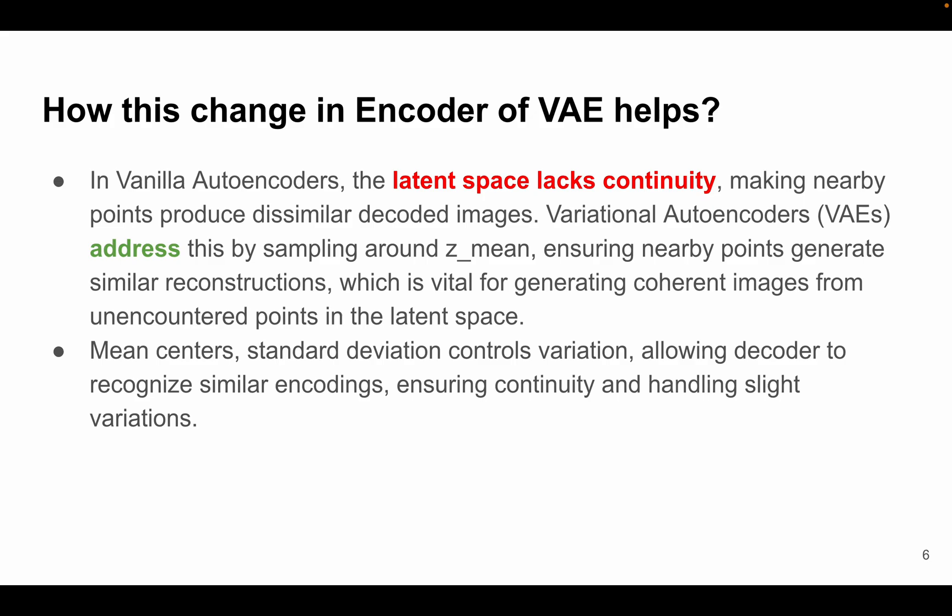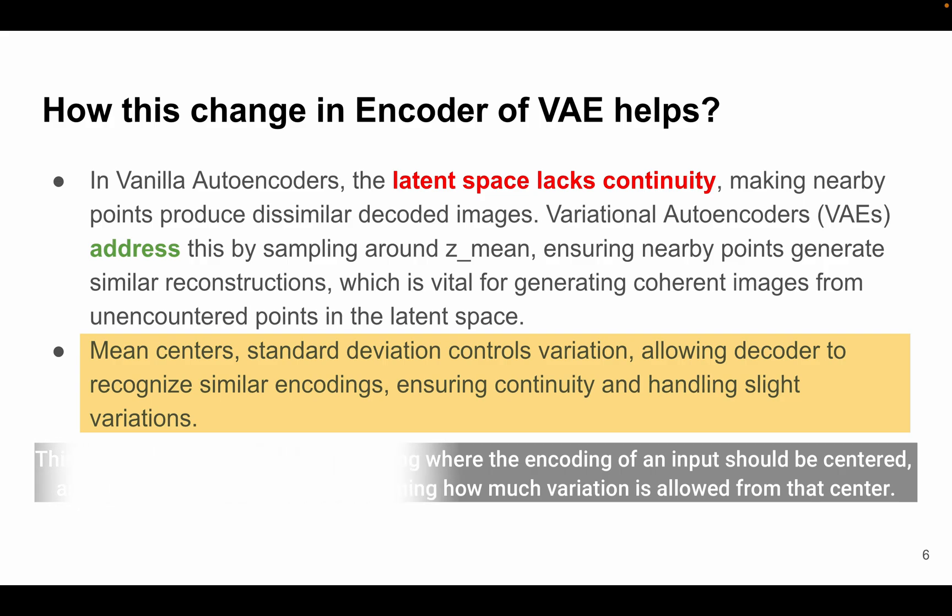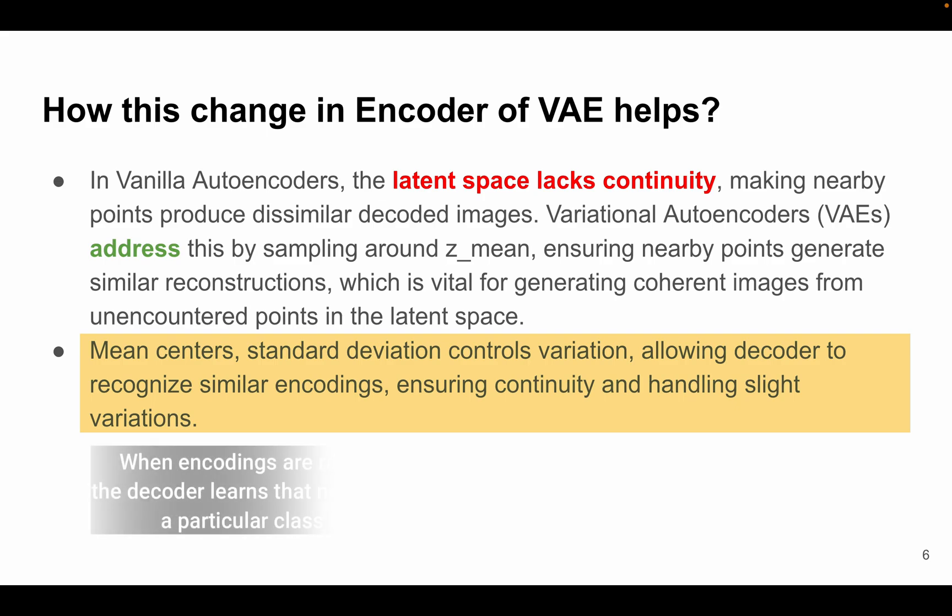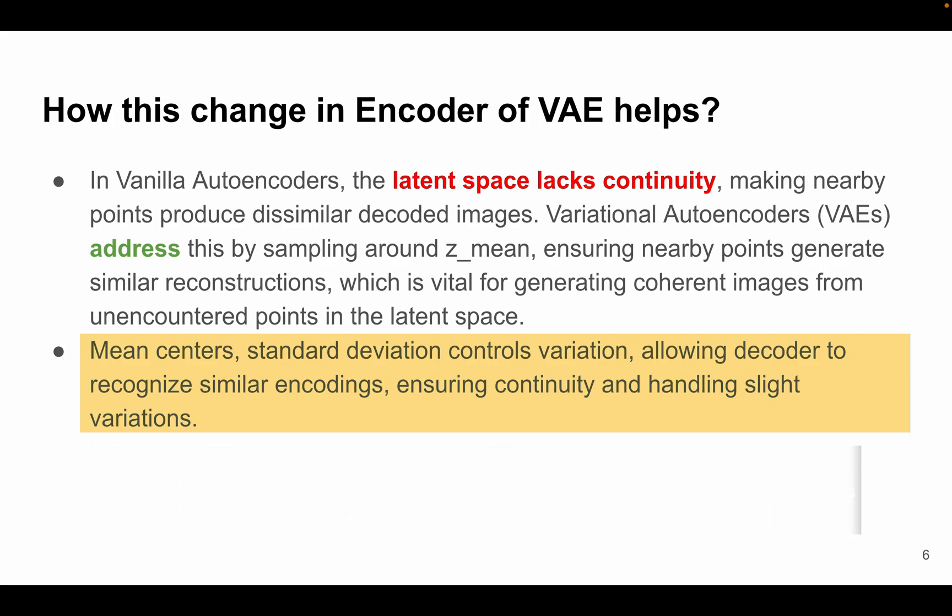So in simple terms, think of the mean vector as determining where the encoding of an input should be centered in the latent space, and the standard deviation as governing how much variation is allowed from that center. Now when encodings are randomly generated within this circle of distribution, the decoder learns that not only one specific point in the latent space represents a particular class, but also the nearby points represent the same class, and that's why this circle is important.